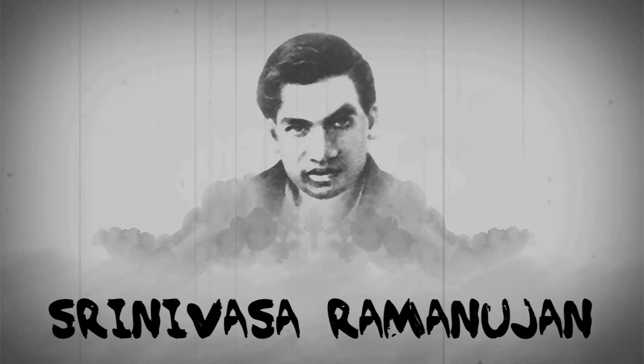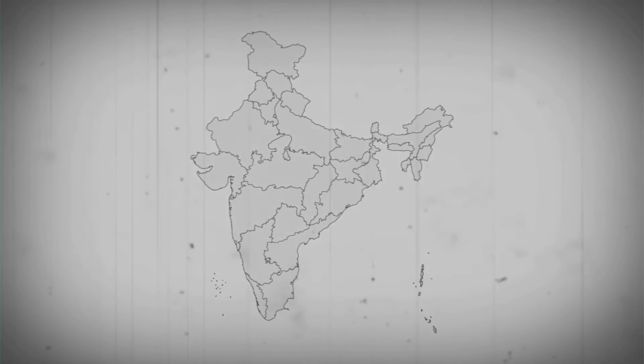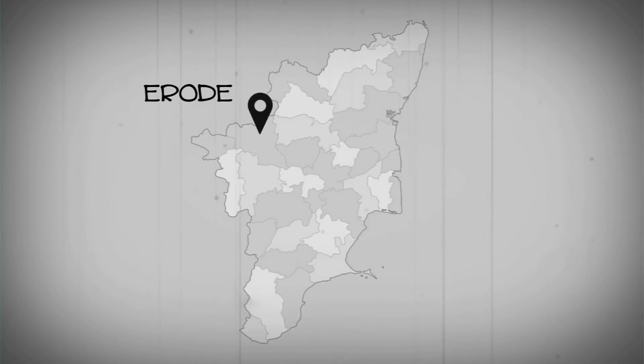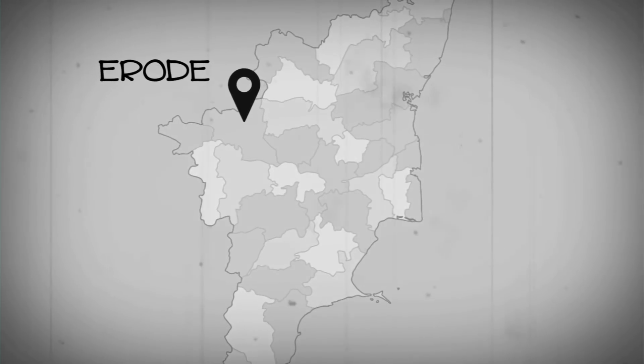Srinivasa Ramanujan, one of India's greatest mathematician geniuses, was born in 1887 in Erode in Tamil Nadu, India.